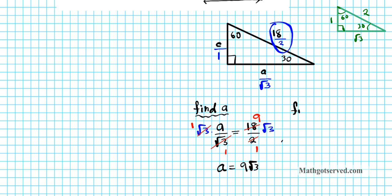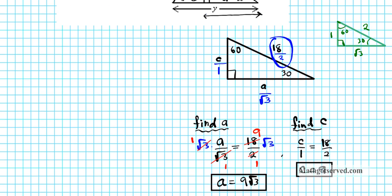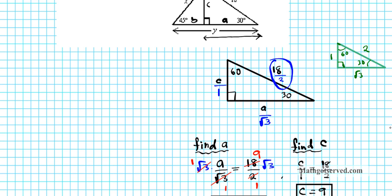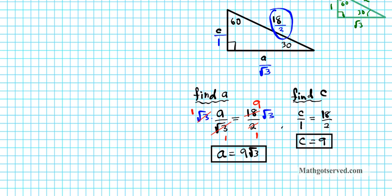Now let's find C. We set up C/1 = 18/2. C over 1 is just C, and 18 over 2 is 9, so C = 9. Placing these values back into the triangle: this portion (C) is 9, and A is 9√3.